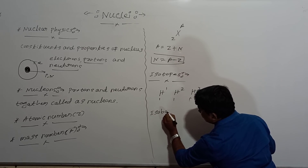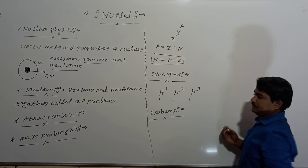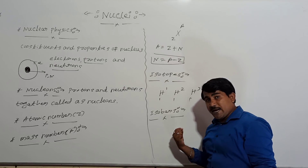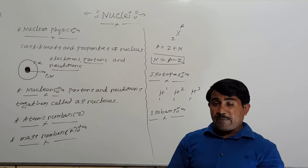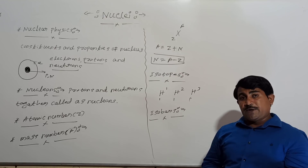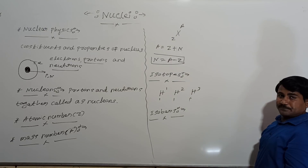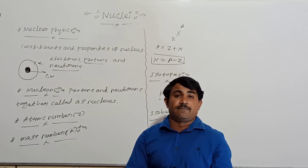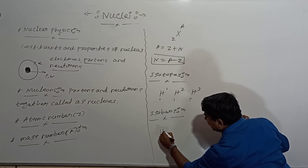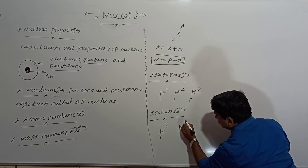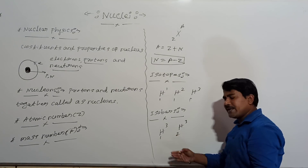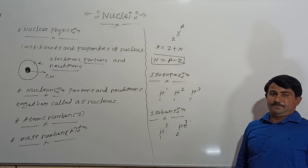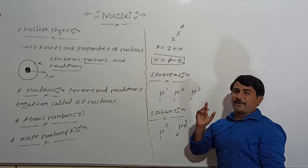Next one is isobars. Iso means same, bar means mass number. Isobars are the nuclei which have the same mass number but different atomic number. For example, taking isotopes of hydrogen and helium — these nuclei have the same mass number but different atomic numbers. Those we are calling isobars.